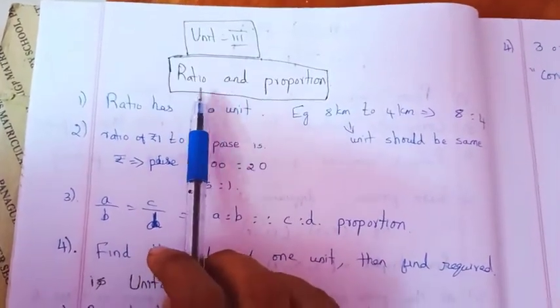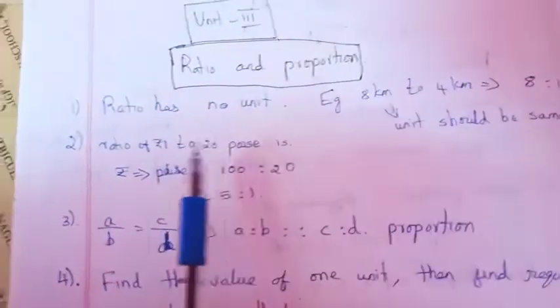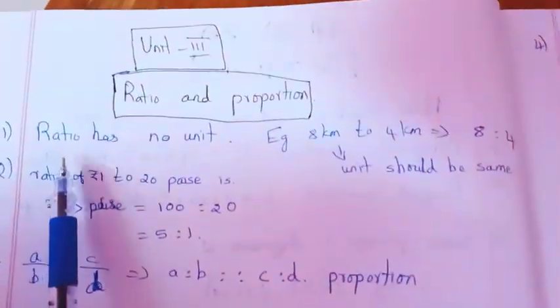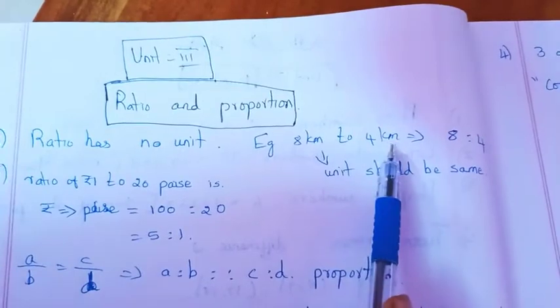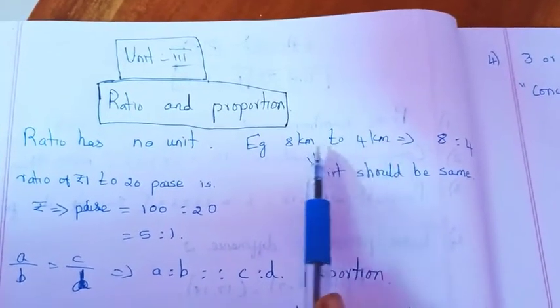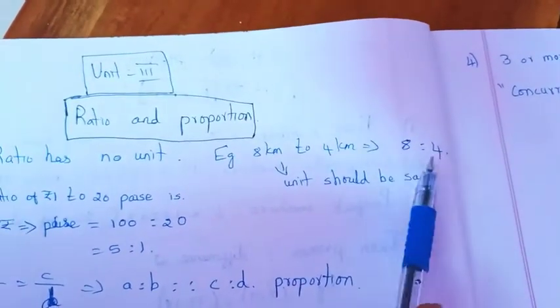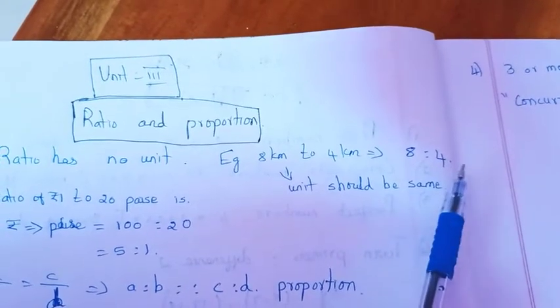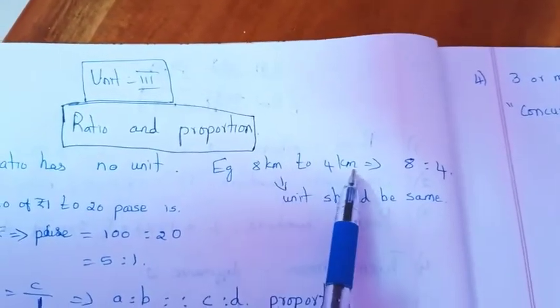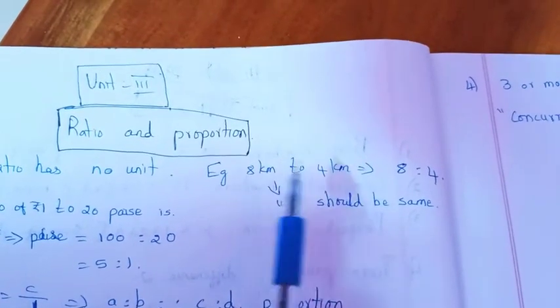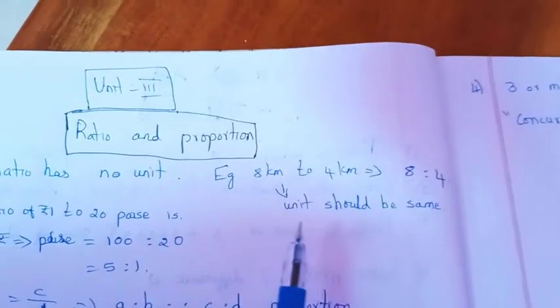So you can see first ratio and proportion. First notes, you can see ratio has no units. Units means kilometer, meter, and meter. So you can see the ratio of the kilometer, and the ratio of the unit should be the same.